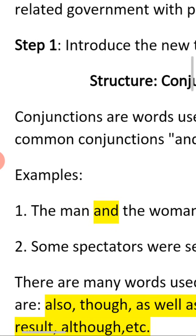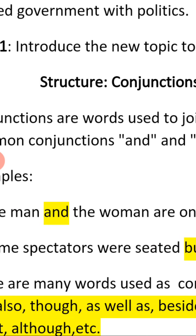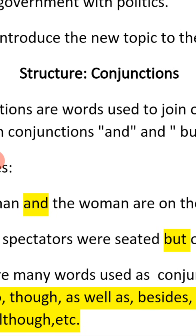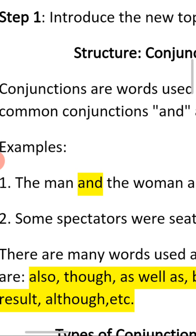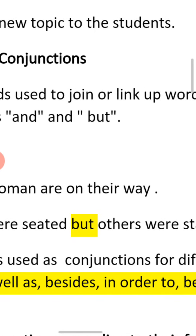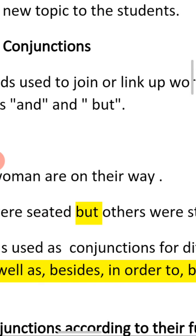Let's look at some examples. 'The man and the woman' — as you can see on your screen, the word 'and' is marked out to show that we are using the conjunction 'and' to join 'the man' and 'the woman.' We also have: 'The spectators were seated but others were standing.' Here 'but' is used to show a contrast — while some spectators were seated, others were standing.